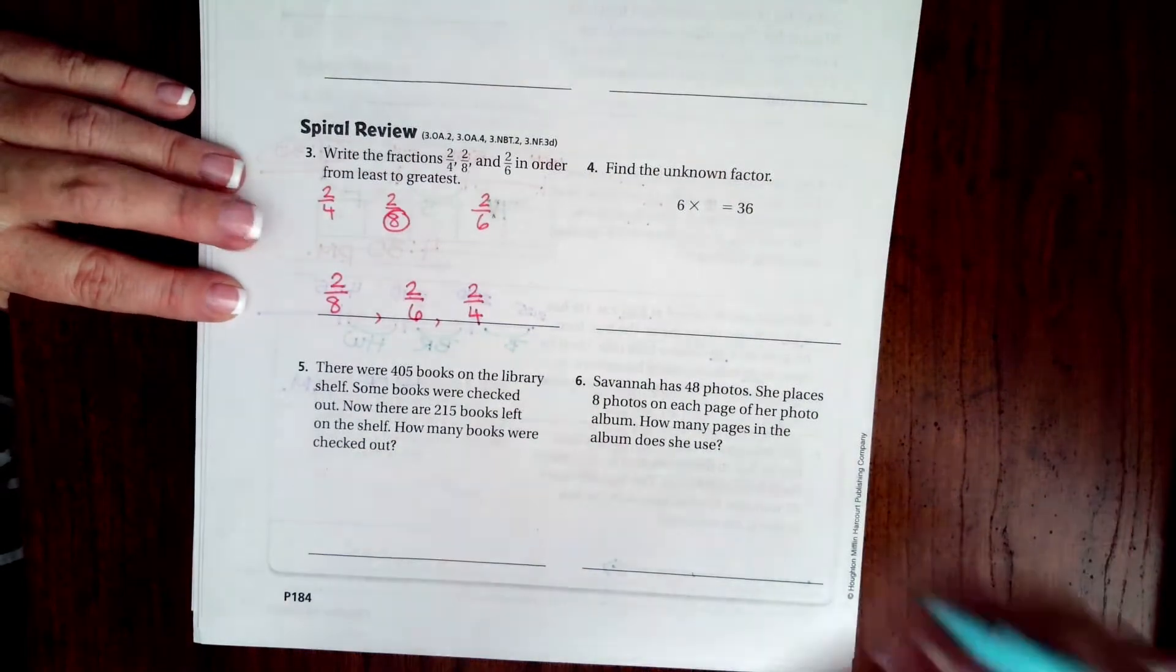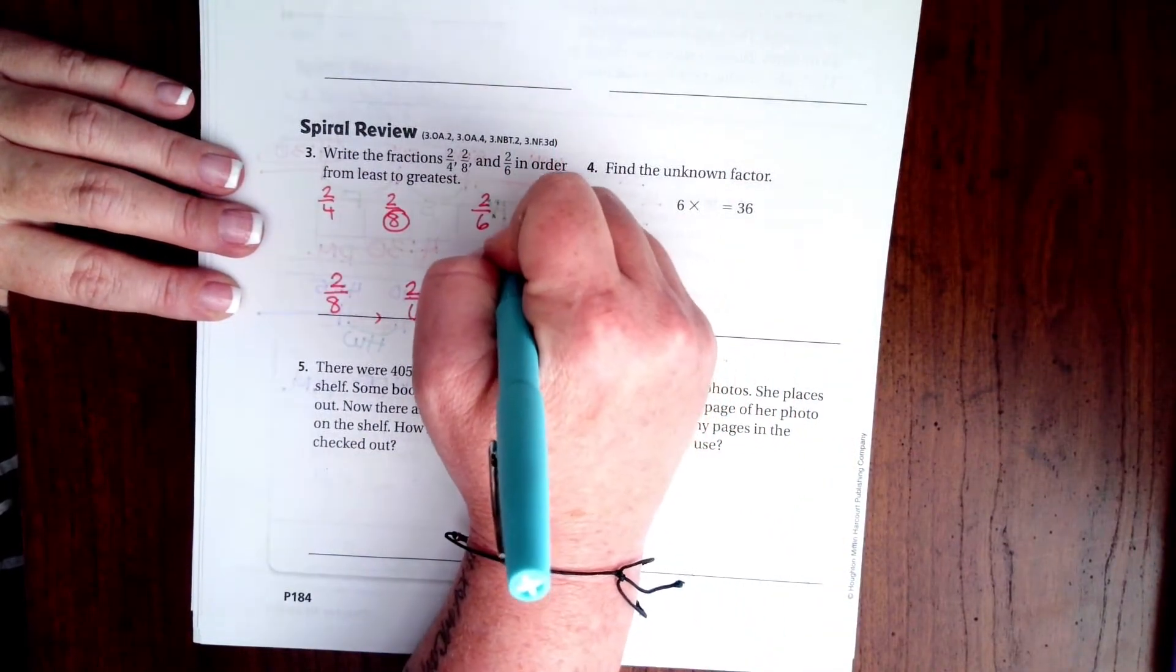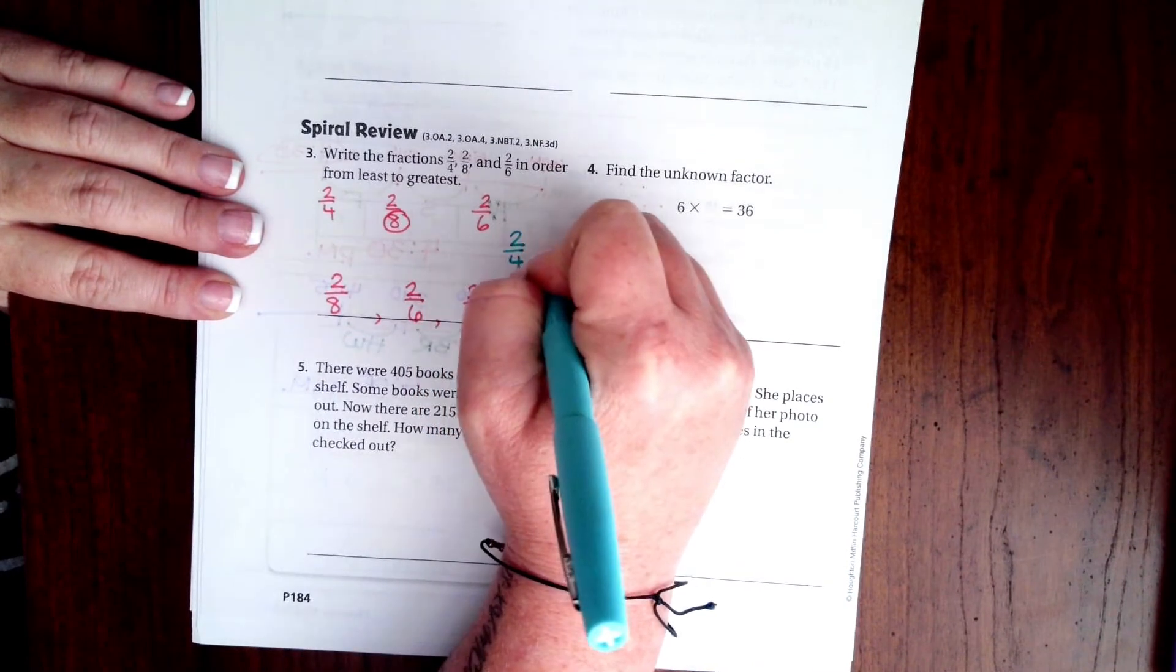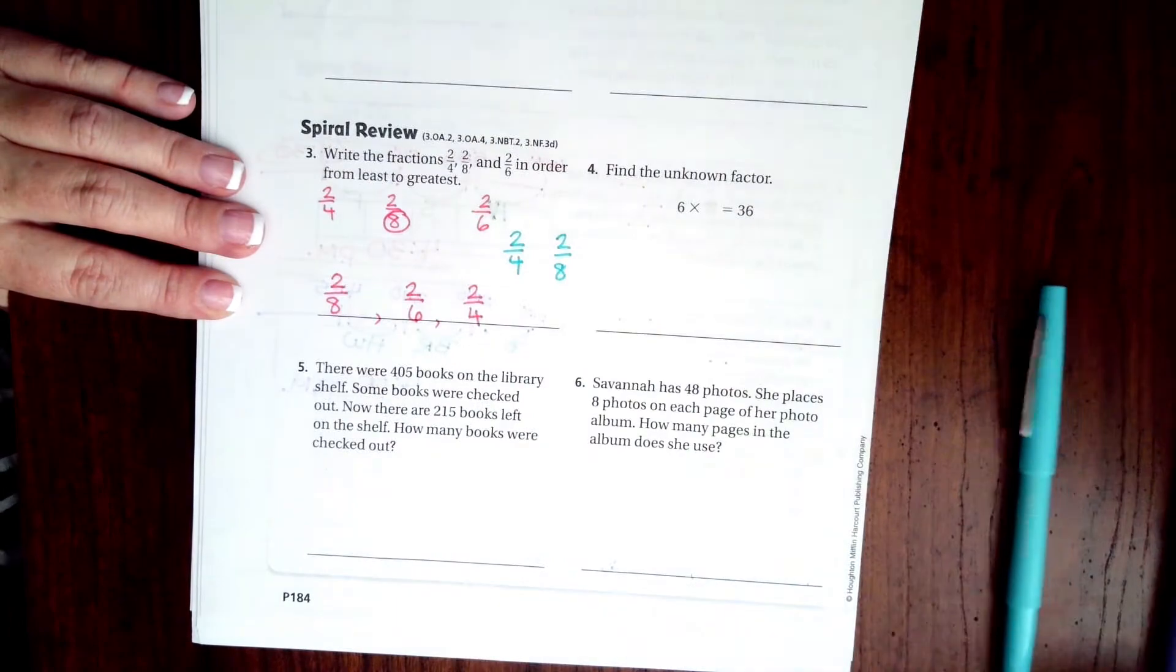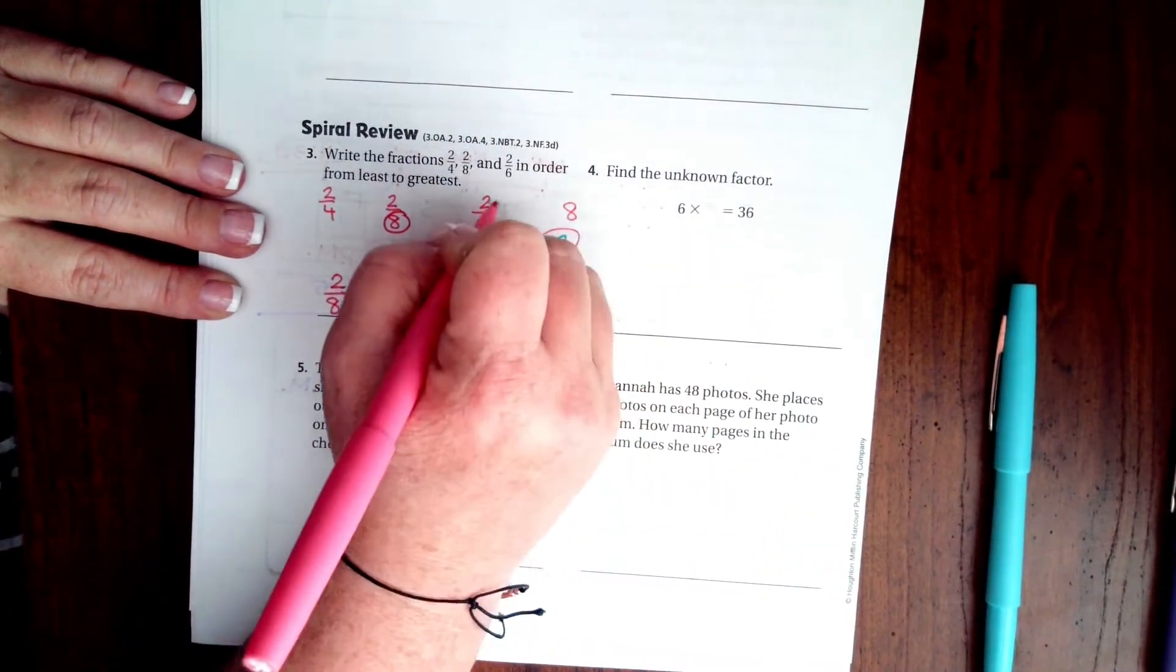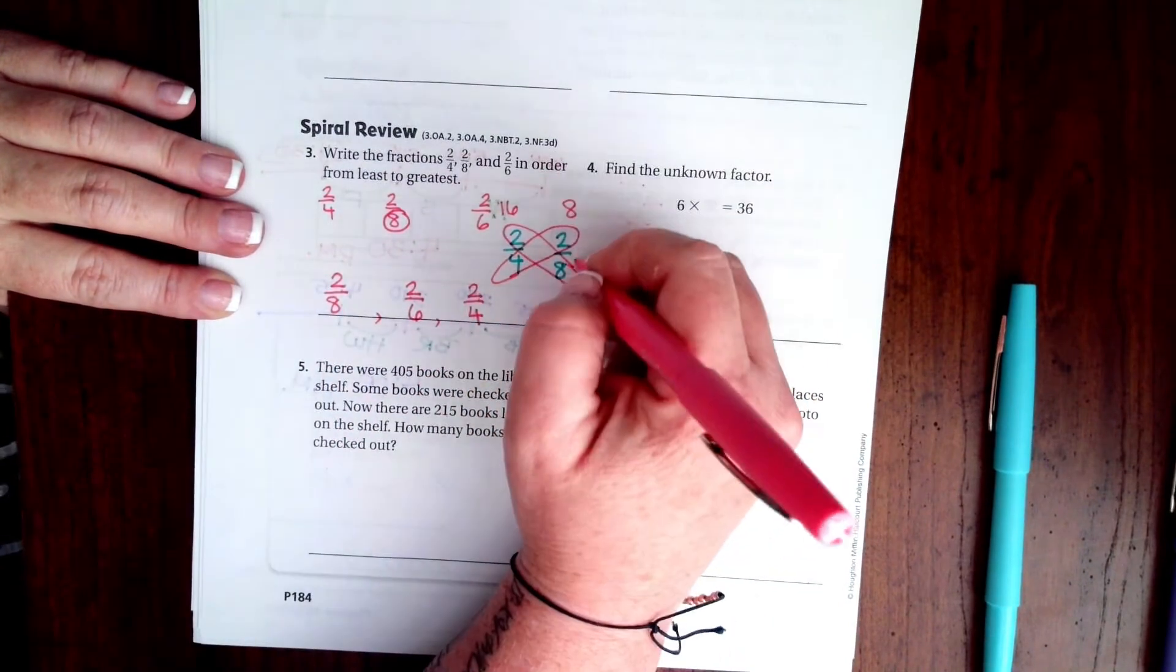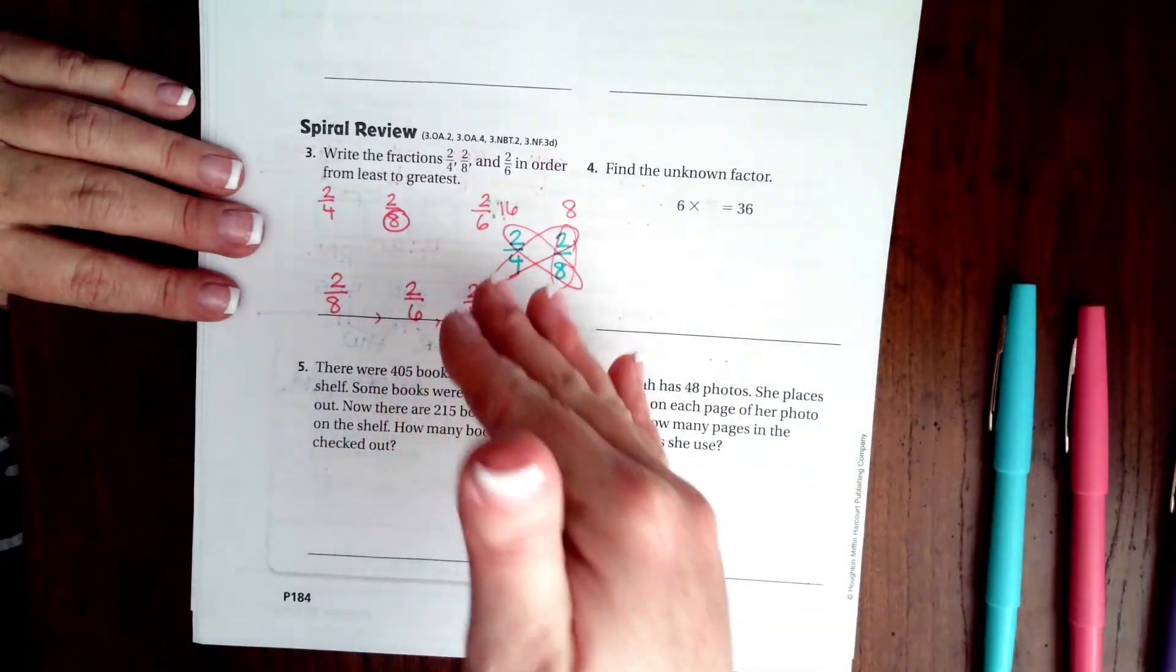You can absolutely do the butterfly thing to figure it all out, where you do 2/4 and 2/8, and then you multiply. That one's 8, that one's 16, so the 8 one is smaller. You can do that if you know how.